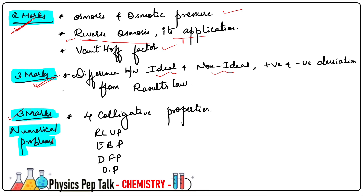The last 3-marks section is numerical problems. For 3-marks numericals, the four colligative properties are key: relative lowering of vapour pressure, elevation in boiling point, depression in freezing point, and osmotic pressure. Questions from these four topics will appear. Two questions will come from these colligative properties in the numerical section.